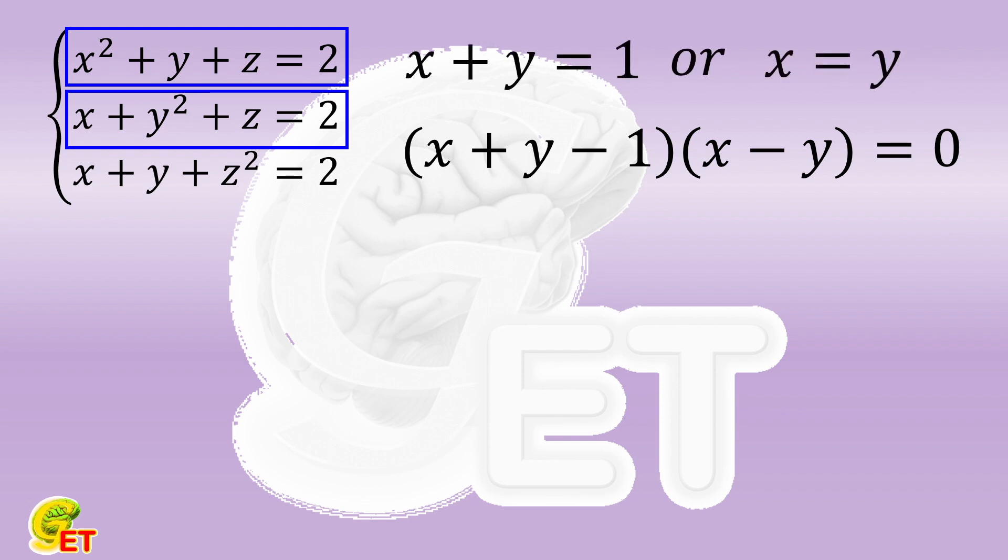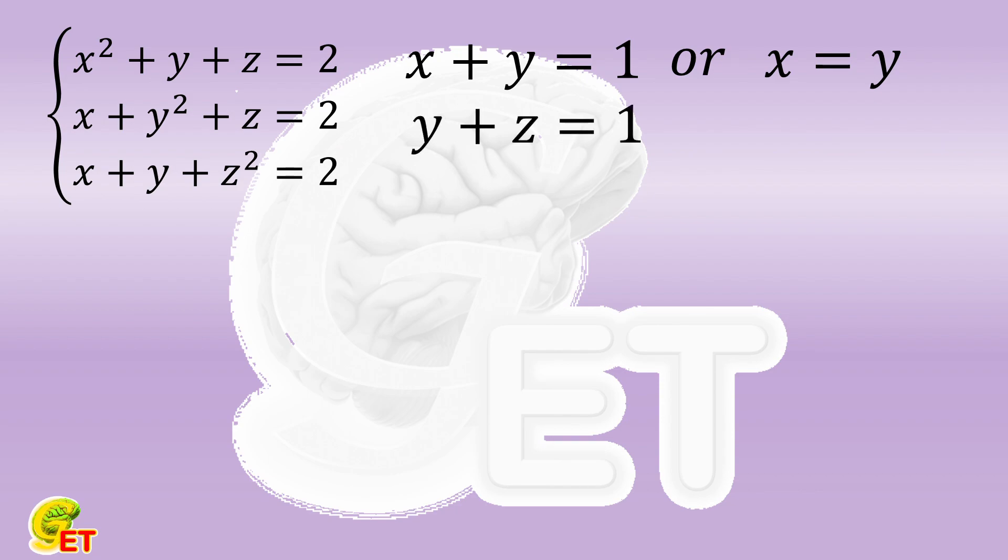In the same way, if we subtract the third equation from the second, we get either y plus z equals 1, or y equals z. Subtracting the first equation from the third, we get either z plus x equals 1, or z equals x.